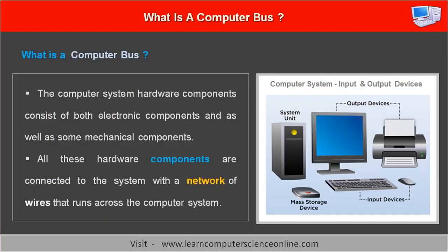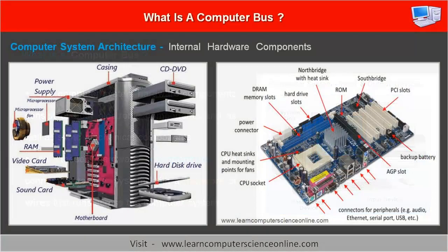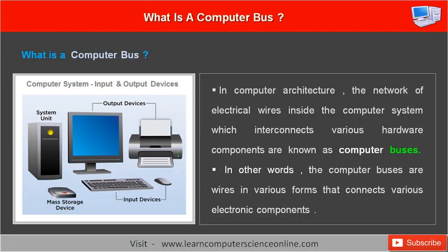The computer system hardware components consist of both electronic components as well as some mechanical components. All these hardware components are connected to the system with a network of wires that runs across the computer system. The computer hardware components are physically interconnected and communicate with each other through this network of wires.